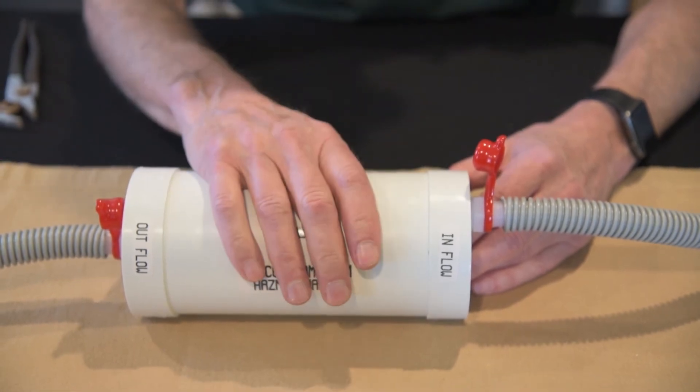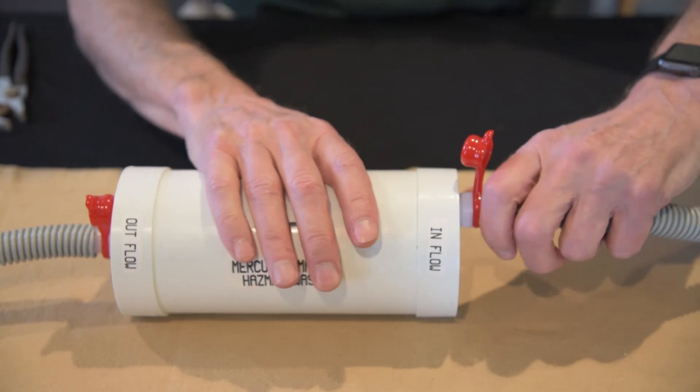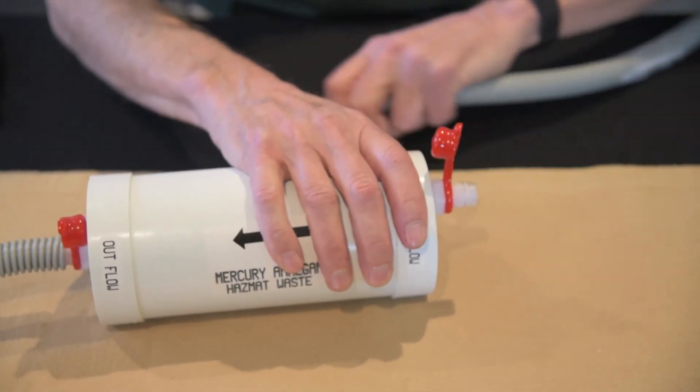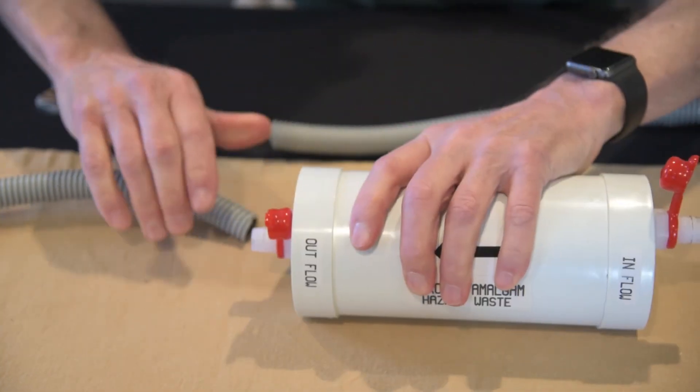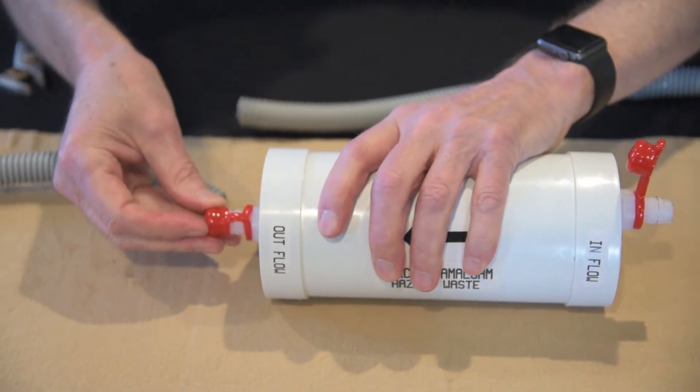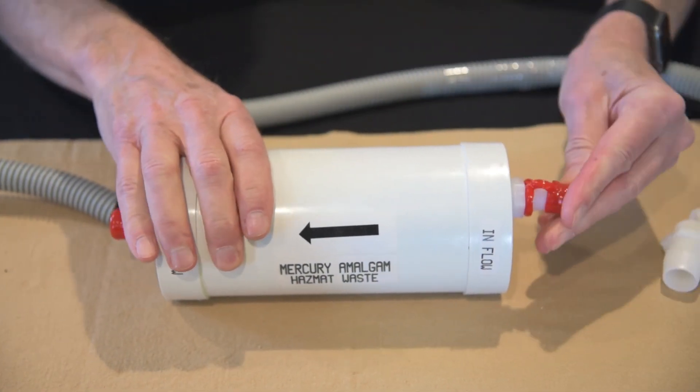And to replace the filter, you just do the opposite of what we've just done. Let's slide the tubing off the two ends. Now we're just going to put our caps on these, just going to put the caps on the end of these two things.